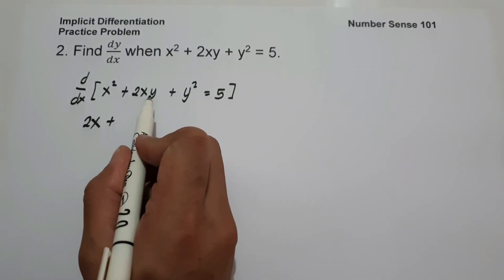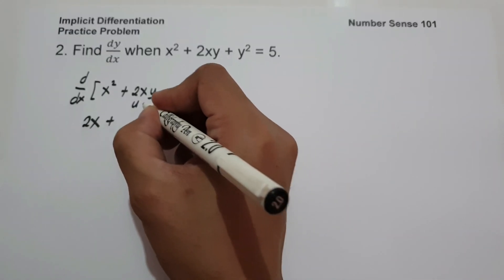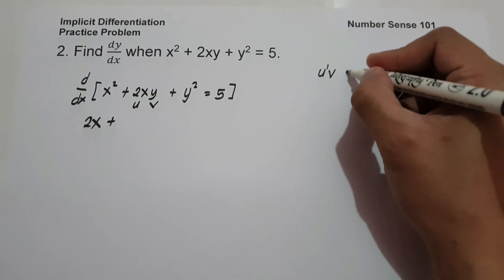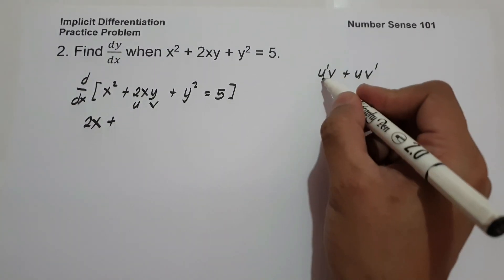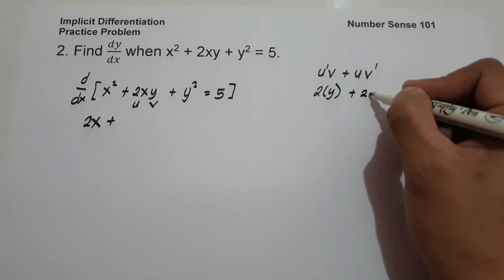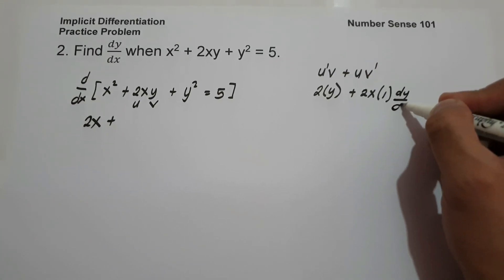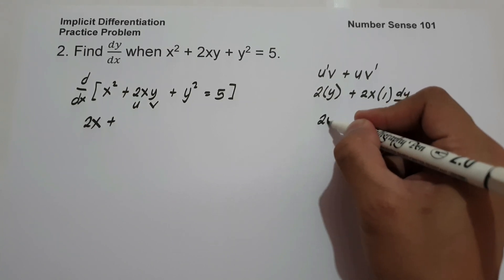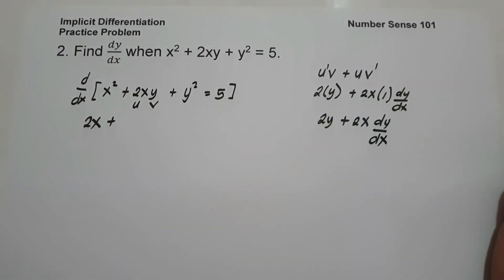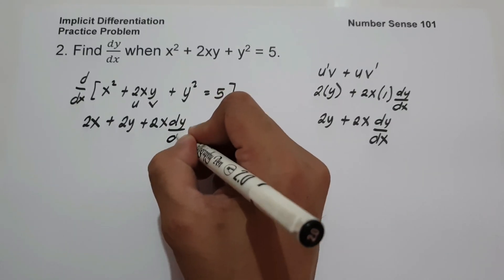Now let us find the derivative of 2x multiplied by y. We have a product of 2x and y, so the value of u is 2x and the value of v is y. Product rule: u prime times v plus u times v prime. U prime, the derivative of 2x, is 2. And v is y. And u is 2x. The derivative of y is 1, but it is associated with dy over dx. Simplified: 2y plus 2x dy over dx.